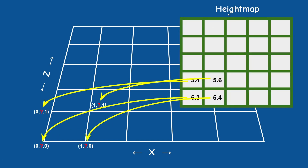Remember that the height map is discrete, which means that we only know the height at the vertices of each triangle, and when the GPU finally renders the triangle the height of each fragment is interpolated. If the camera is located directly on a vertex then problem solved — we know exactly the height at this point. But when the camera moves from vertex to vertex, in order to constrain to the ground we need to manually interpolate the heights using the height map.